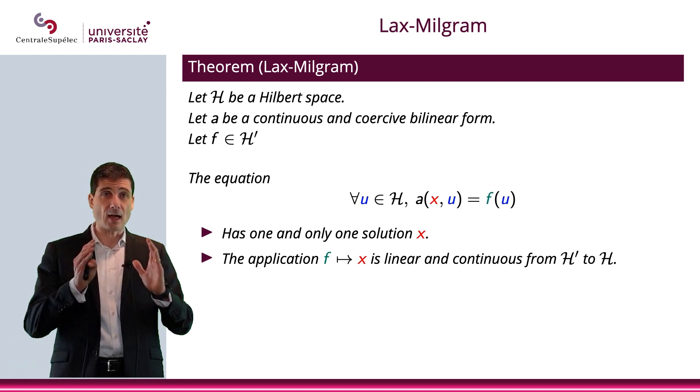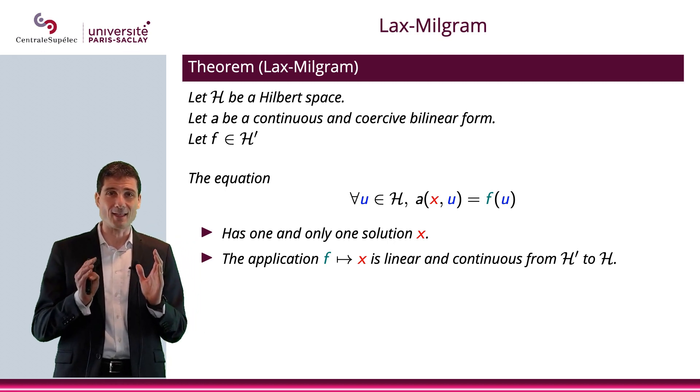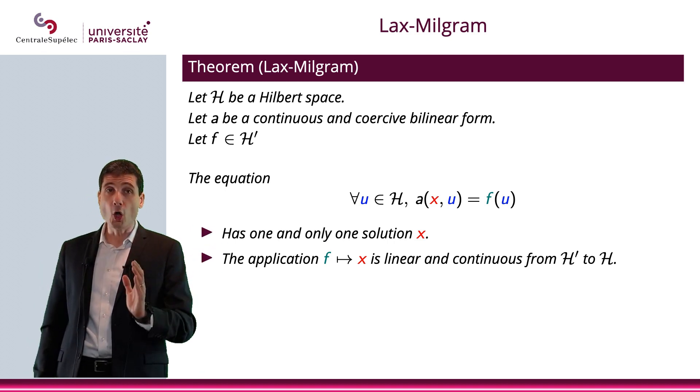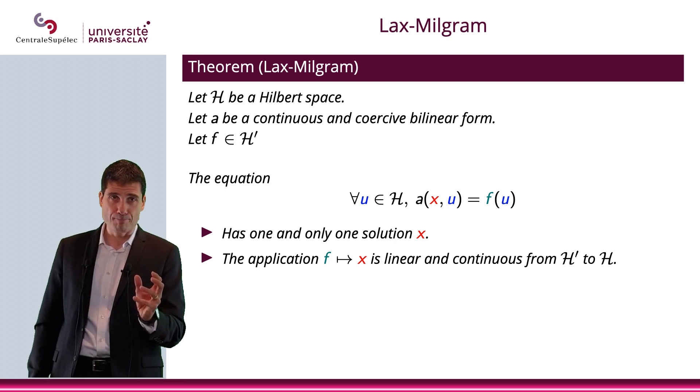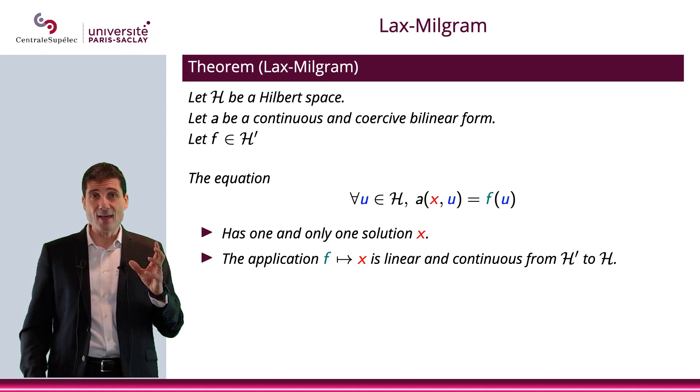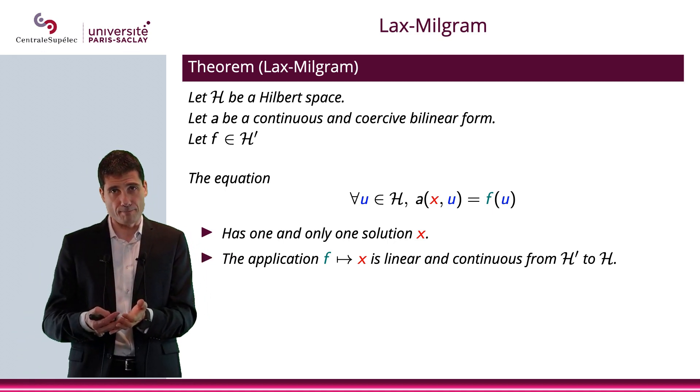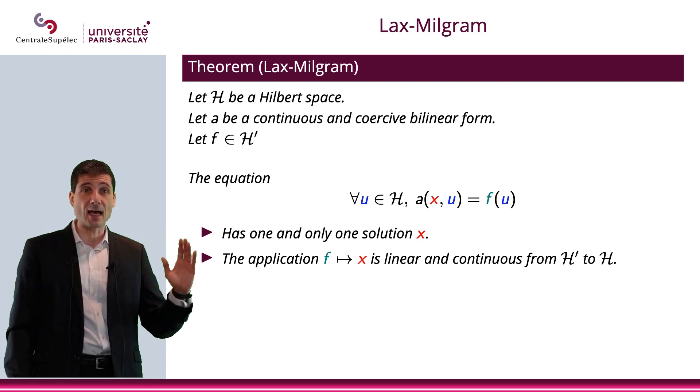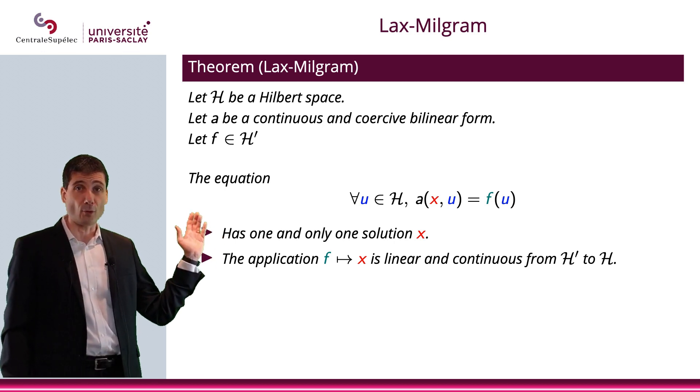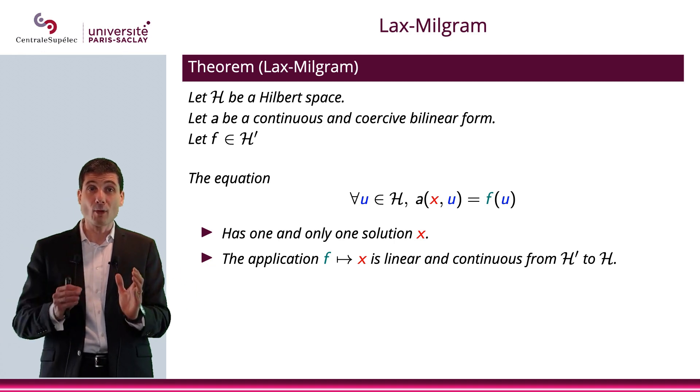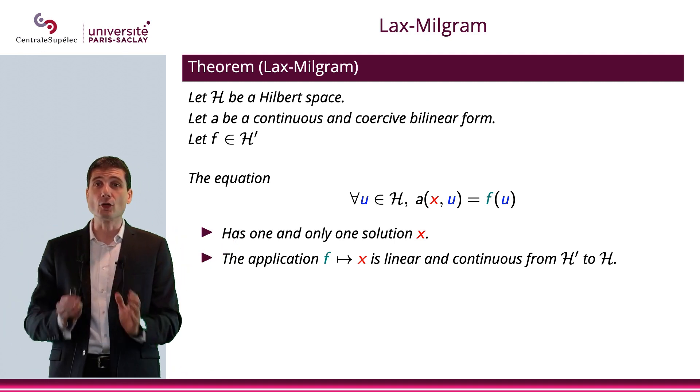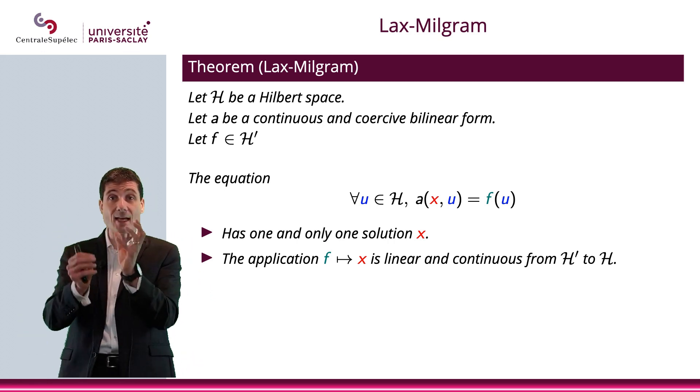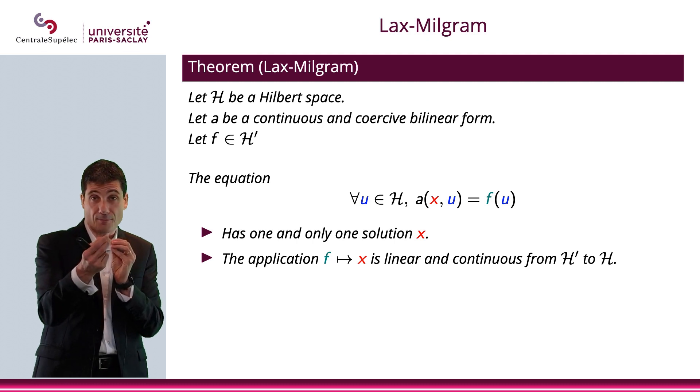Now, I would like to emphasize pretty much all the players here in this equation. First, I would like to stress that this has to be true for all U in H. So, U will be some kind of test function. On the right hand side, you have F. F is somehow the data. It's the right hand side to your equation. And X is the solution you're looking for. So, what we're saying is that the Lax-Milgram theorem, if you meet the requirement, if you meet the hypothesis for this theorem, it will tell you that this equation has a solution and the solution is unique. That's the first item. And the second item to the list is that the application that takes an F, a right hand side, and gives you that solution, will be continuous.